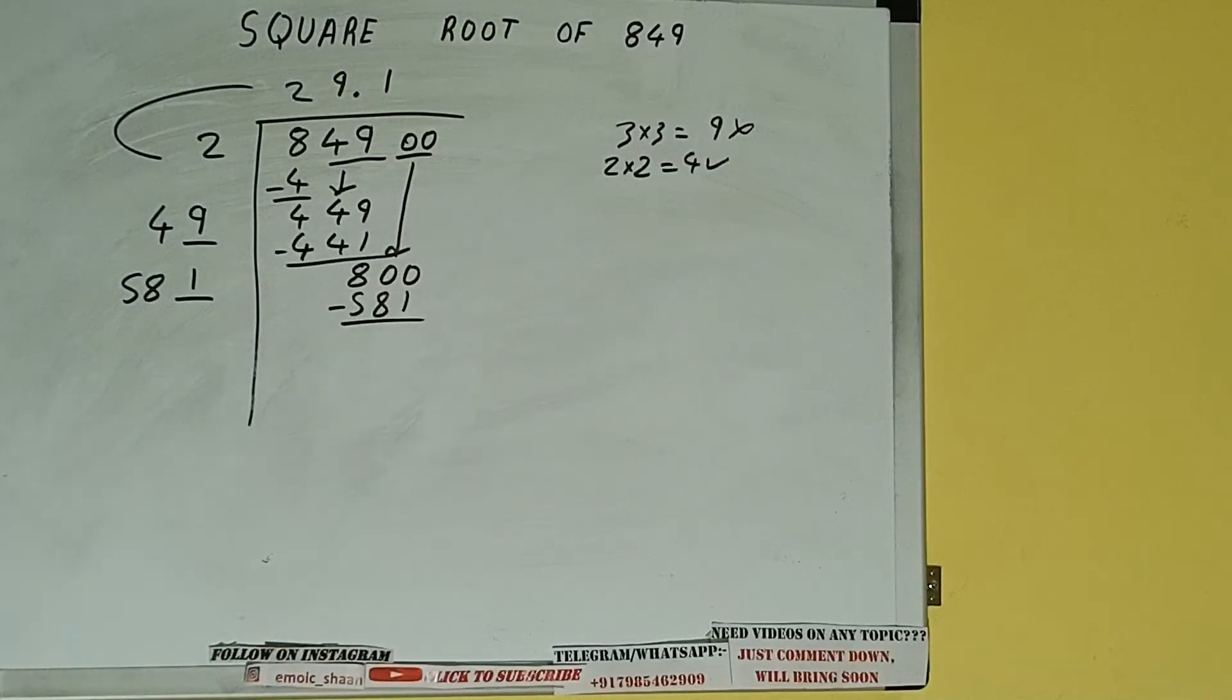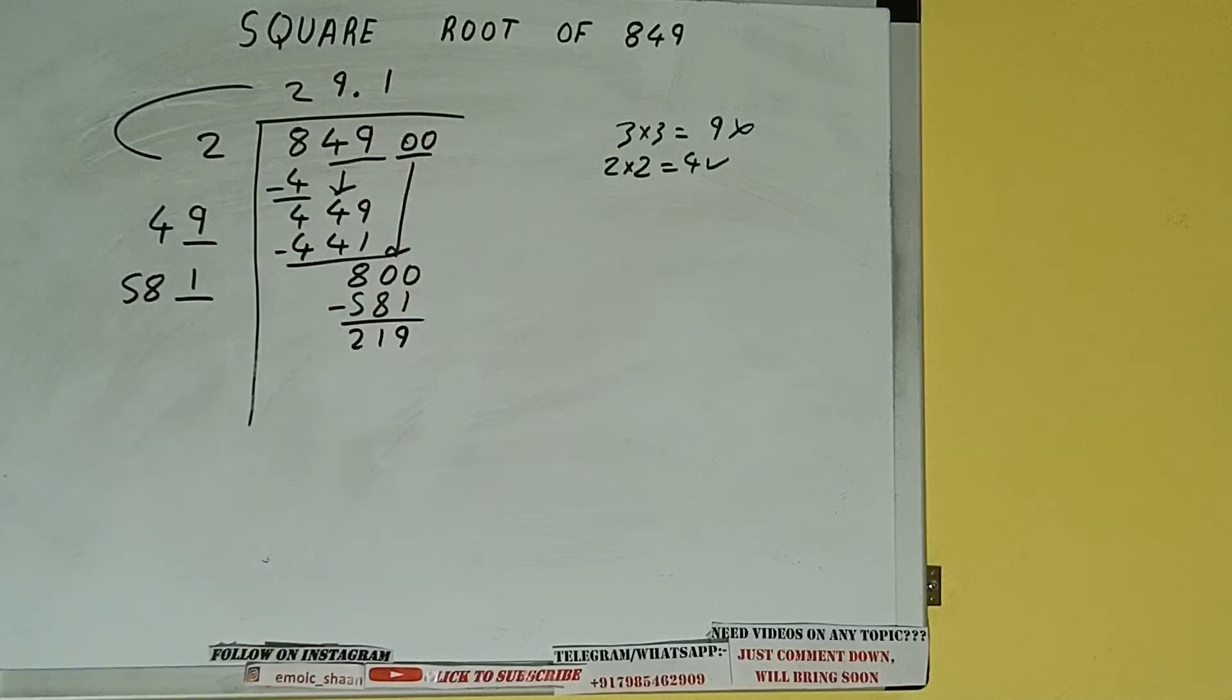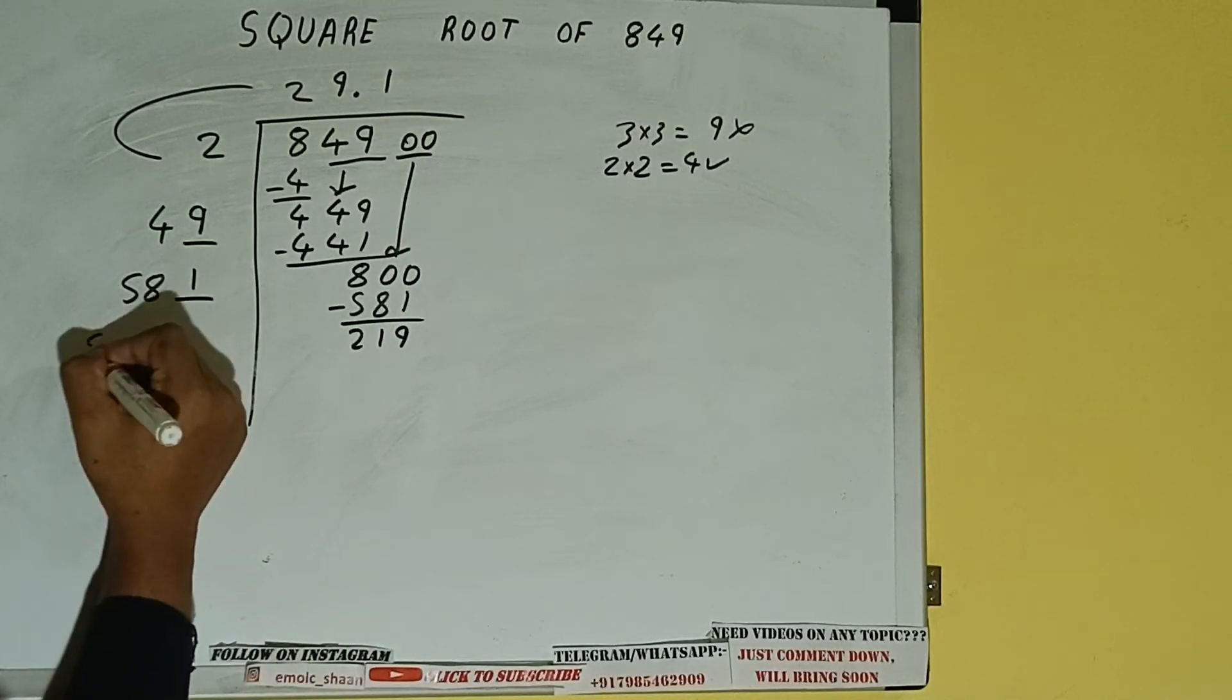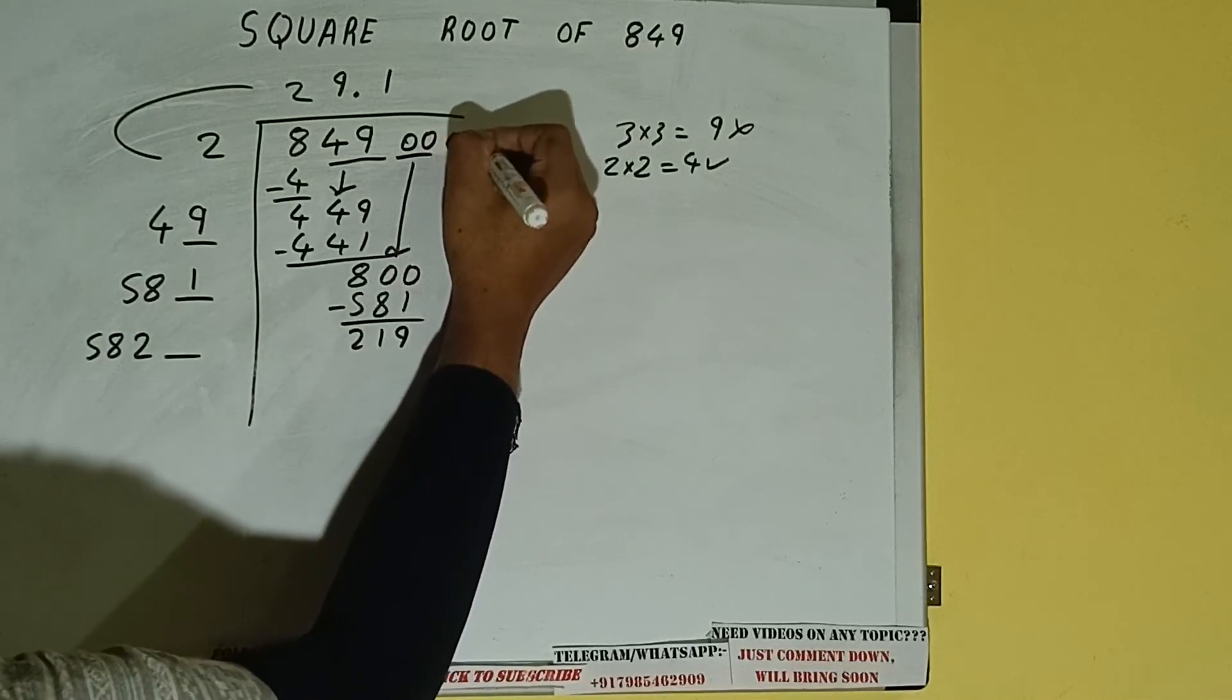Subtract. So 581 plus 1 will be 582 and 1 digit extra. And this number we need to make it big.